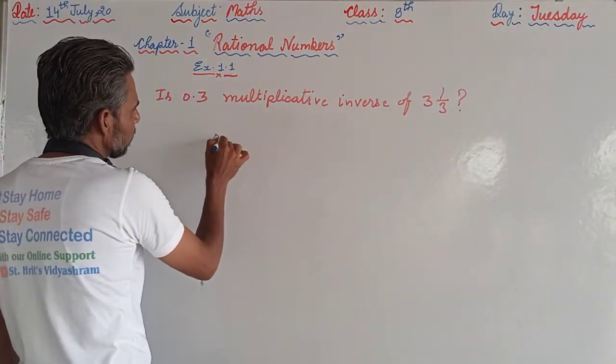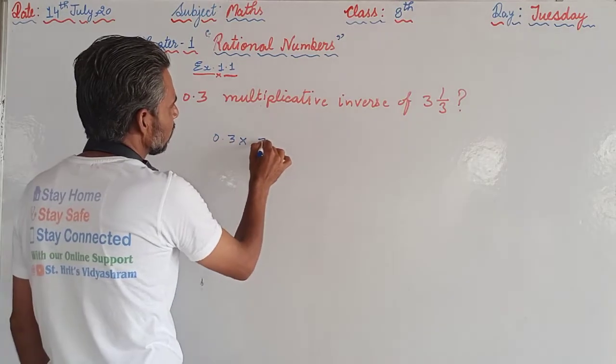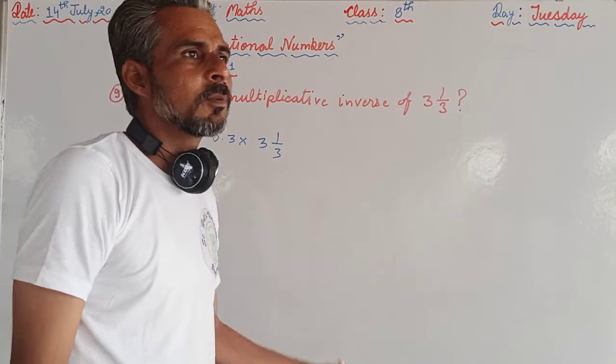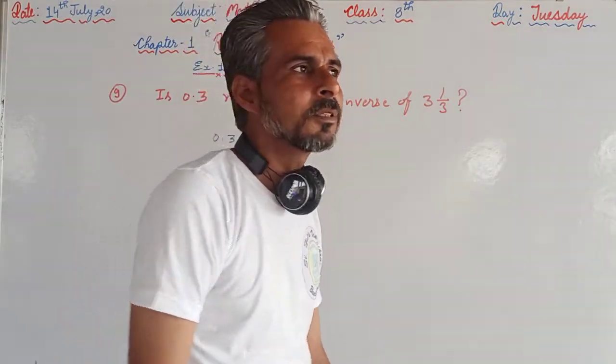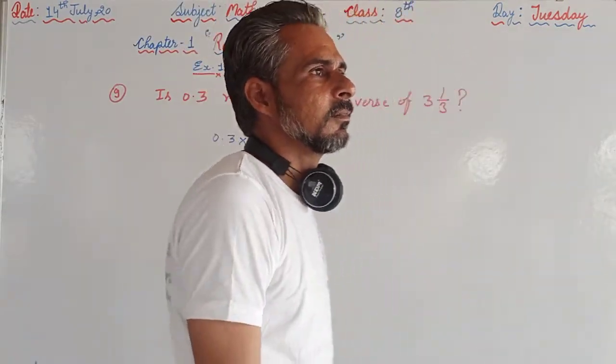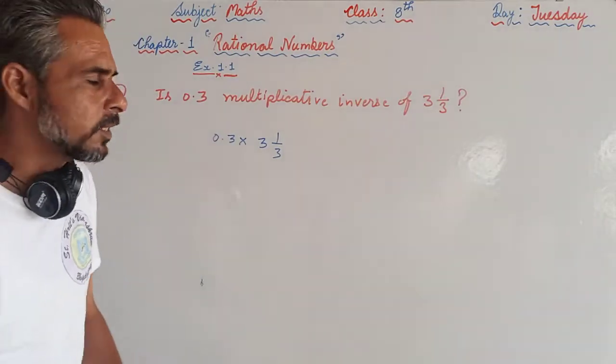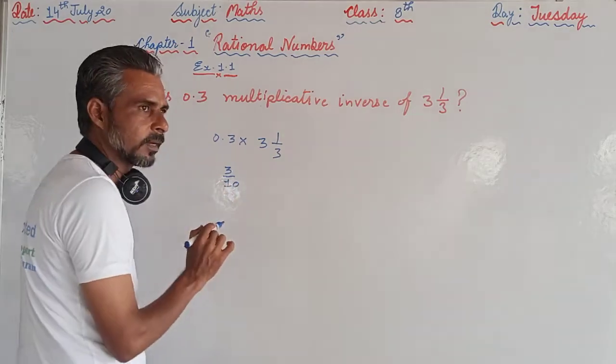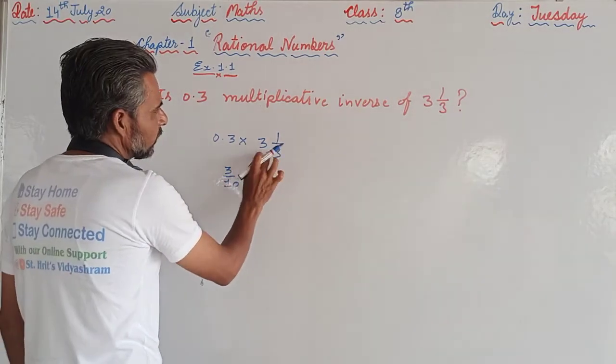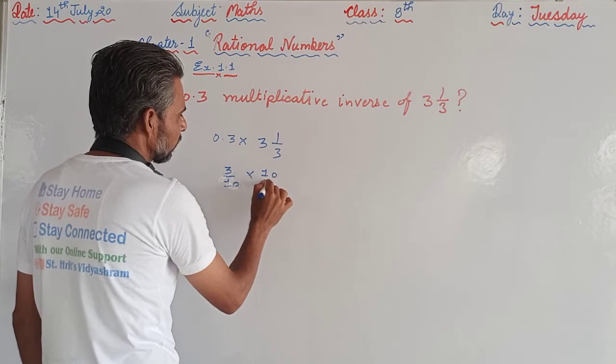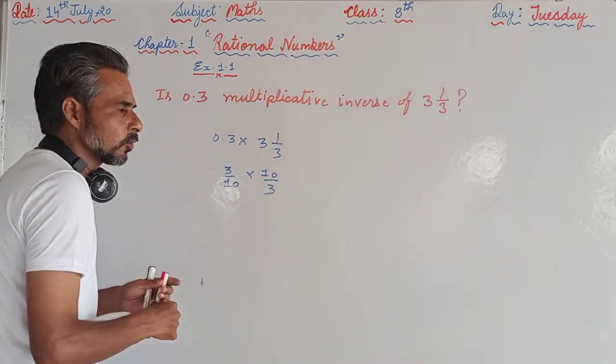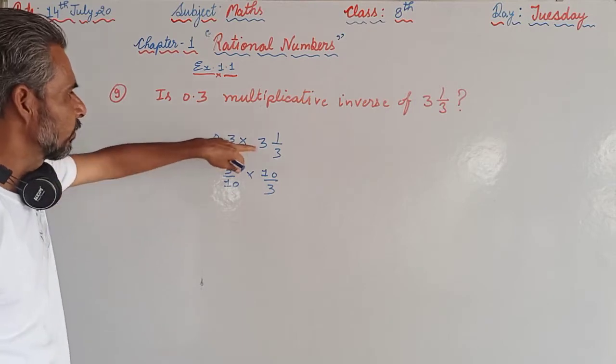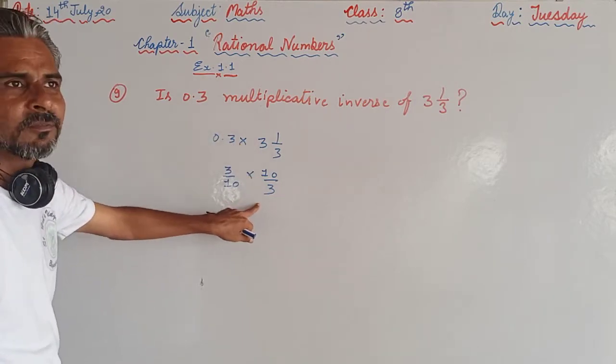So 0.3 into 3 and 1 by 3, we will find the product. If the product of these two numbers or any two numbers becomes 1, then we can say these are reciprocal of each other. So 0.3 means 3 upon 10. 3 and 1 by 3 is 9 plus 1, which is 10 upon 3. So here we have changed the decimal form into fraction and here we have changed the mixed fraction into improper fraction.